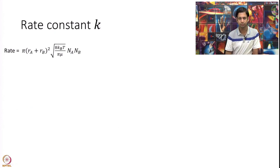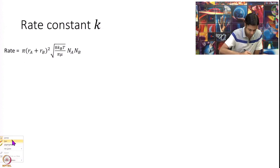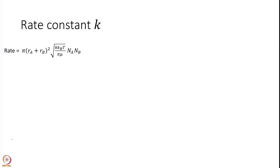First, let's simplify and calculate the rate constant. What is the difference between rate and rate constant? Let's write the reaction clearly: A plus B going to products, and remember we're assuming this is elementary. This is one step, A and B are colliding and giving products.